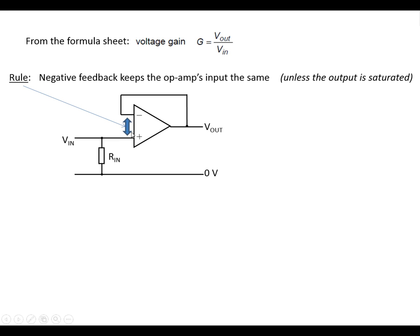So we've got the two voltages here that are going to be the same. We've got V in going to this input, V out going to the other one, which means that V out is equal to V in. If we apply this to the gain formula, the gain is V out over V in. They're the same voltage, so we end up with a gain of 1.